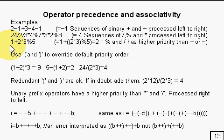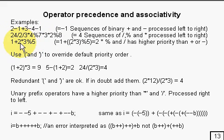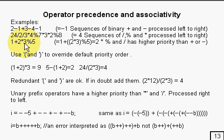Here's an example to demonstrate priority. If you see an expression like this, the multiply and remainder operators have higher priority than plus. So those get worked out first: 2 times 3 is 6, 6 remainder on division by 5 is 1, so it becomes 1 plus 1, which is 2.